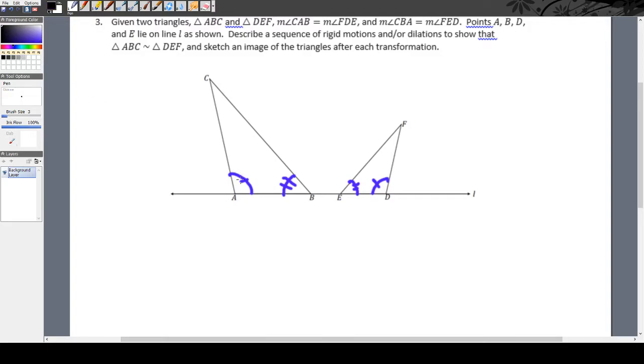So my first step, I'm going to reflect. Now where am I going to reflect? Well, if I think about the definition of reflection, I know that wherever my line of reflection is, all the points are going to be equally distant from the line of reflection.